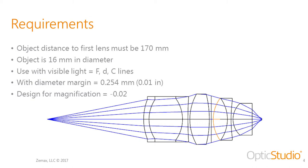We want to use this with visible light so we will need to add wavelengths representing that spectrum. We will also be optimizing the system with a semi-diameter margin of 0.01 inches, which will automatically extend the semi-diameter of all surfaces so we have a little bit of margin. We will also be designing for a magnification of 0.02, which is negative in this case because the image will be flipped upside down.